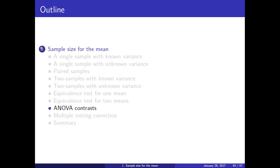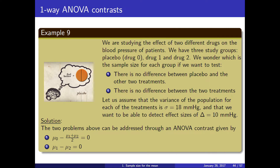We will now see how to compute the sample size for ANOVA contrasts. ANOVA is the tool you use when you want to compare multiple groups. For example, let's say you want to see the effect of different drugs on blood pressure and you have three groups: one taking a placebo and two other drugs to compare. We want to test if there is no difference between the placebo and the other two treatments, and if there is no difference between the two treatments. These are contrasts — the technical word for this kind of comparison.